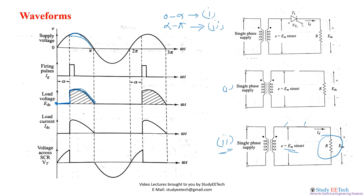From pi to 2pi, the switch will be off, so the equivalent circuit reverts to mode one and the output voltage is zero. Therefore we get zero voltage in that interval.